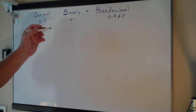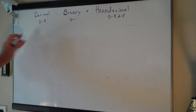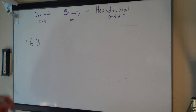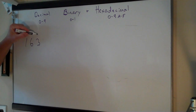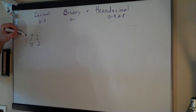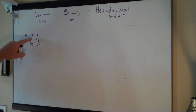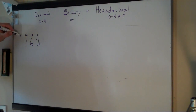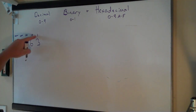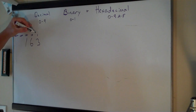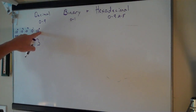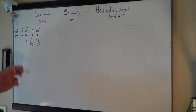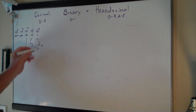To explain binary, first let's talk about decimal. With a normal number like 163, the 3 is in the 1s column, the 6 is in the 10s column, and the 1 is in the 100s column. So this means 3 ones, 6 tens, and 1 hundred. If you had a bigger number, you'd go to 1,000, 10,000, and so on. The reason these place values are what they are is because they're powers of 10: 10 to the 0th, 10 to the 1st, 10 to the 2nd, and so on. The base is 10, and the exponent starts at 0 and goes up — that's why we call it a base 10 system.